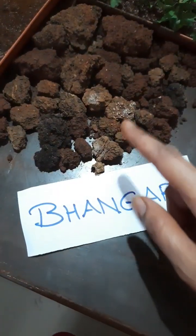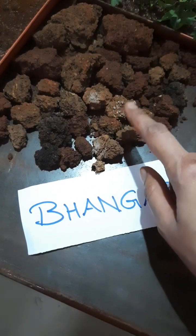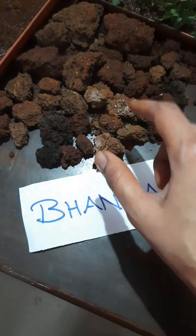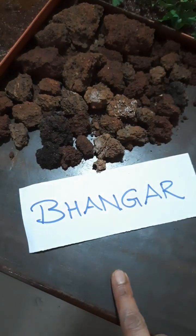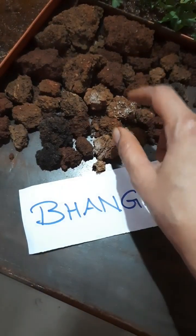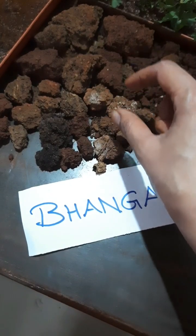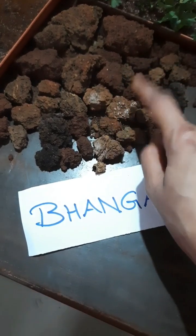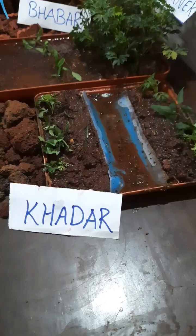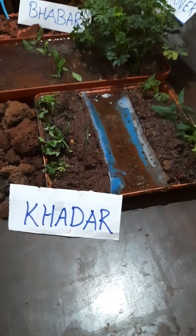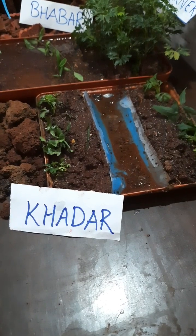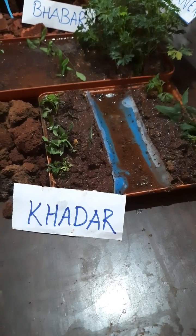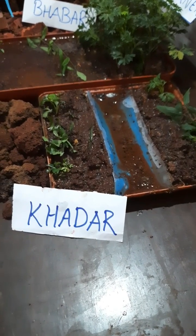The largest part of Northern Plains is of older alluvium. This region is called Bhangar, and the calcareous formations of these deposits are called Kankar. The lower and younger deposits of flat plains are fertile and are called Khadar. They are ideal for intensive agriculture.